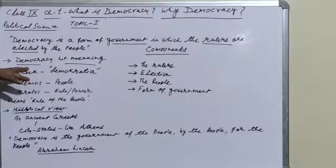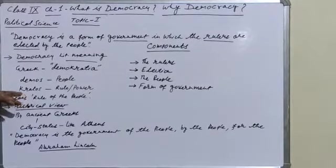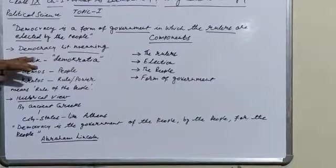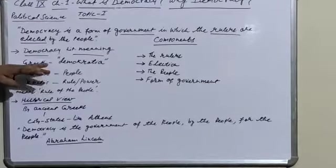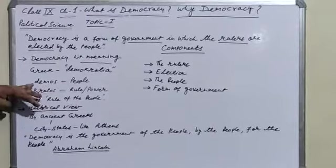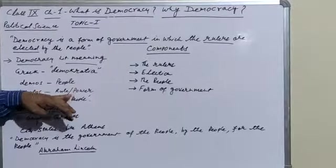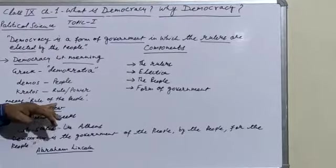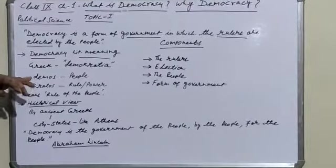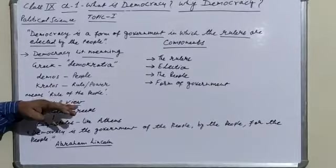Now, we start from the meaning of the word democracy. What is the literal meaning? This is the Greek word 'demokratia', from where this word has been originated. This word has been constituted by two words — demos and kratus or kratia. Demos refers to people and kratus refers to rule or power. It means rule of the people, government of the people, power of the people.